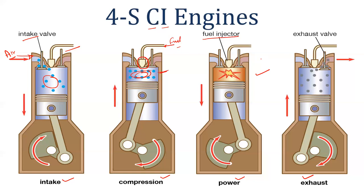So, in SI and CI engines, there is no difference in the 4-stroke cycle. The working principle is the same. The only differences are: in SI, an air-fuel mixture is inducted and a spark plug produces the spark for ignition; in CI, only air is inducted and fuel is injected through an injector for auto-ignition. This completes our 4-stroke CI engine explanation.